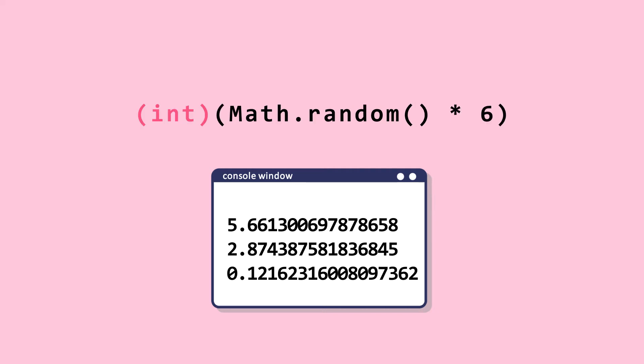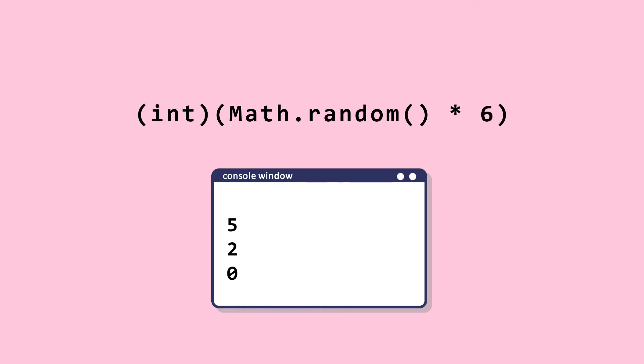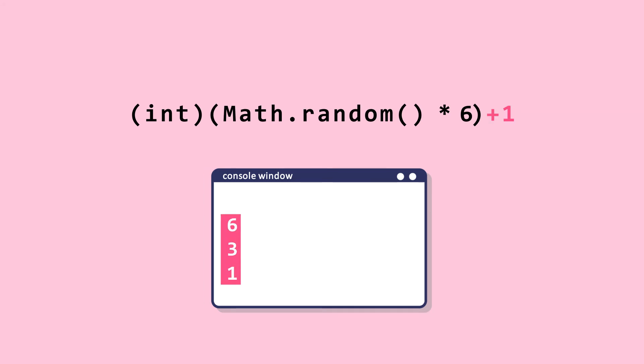let's cast double to integers and get rid of the decimals. This expression gives random numbers from 0 to 5. We need to add 1 to move the range up by 1, so it gives numbers from 1 to 6. The dice is ready now. Let's play!